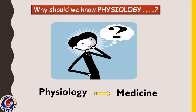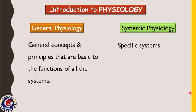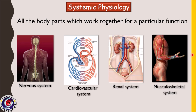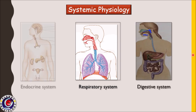The question arises: why should we know about human physiology? This is because sound knowledge of physiology is essential to understand various disease processes and hence medicine. For convenience of teaching and learning, physiology is divided into general physiology and systemic physiology. General physiology deals with concepts and principles basic to all systems, whereas systemic physiology deals with specific systems such as the nervous, cardiovascular, renal, musculoskeletal, respiratory, digestive, endocrine, and reproductive systems.